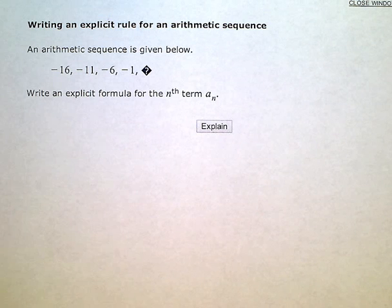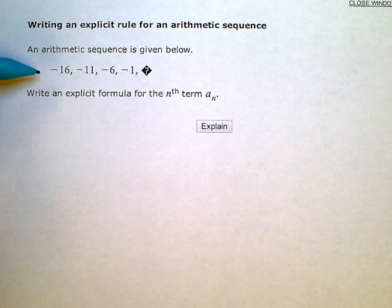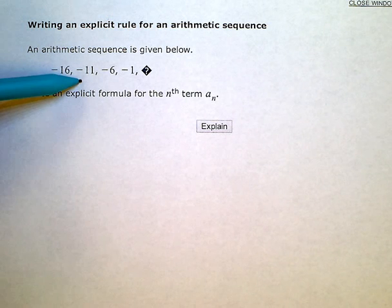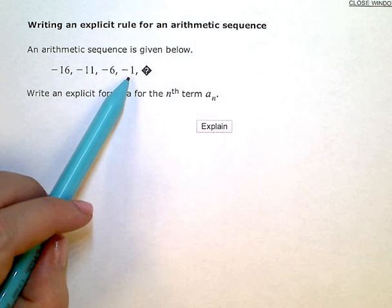Writing an explicit rule for an arithmetic sequence. An arithmetic sequence is given below. So my sequence, the first term is negative 16, the second term is negative 11, third term is negative 6, fourth term is negative 1.